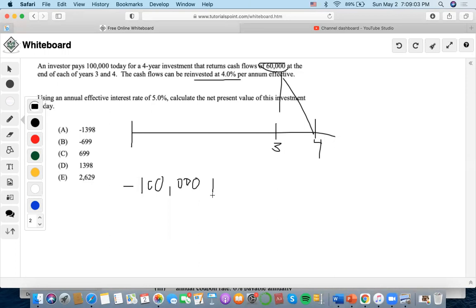So we could do $60,000 times the reinvestment rate of 4%, so it's this. Then we end up getting $62,400, right? So when we get $62,400, we could add that to what is occurring at time four, so add an extra $60,000, and we end up getting $122,400.